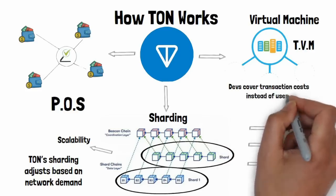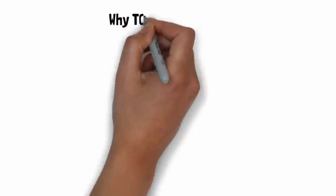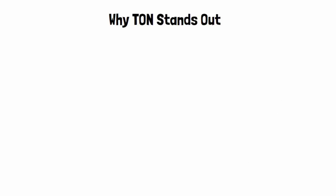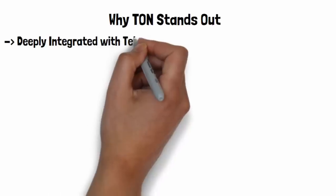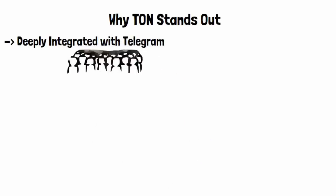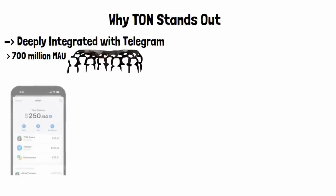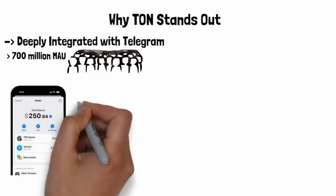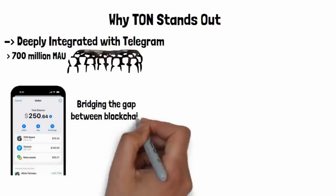So what makes TON unique compared to other layer one blockchain solutions? One of the biggest advantages is its deep integration with Telegram, which boasts over 700 million monthly active users and aims to surpass 1 billion soon. With this vast user base, TON's blockchain is positioned to make crypto more accessible to the average user. For example, TON's self-custodial wallet is directly integrated into Telegram, allowing users to send, receive, buy, and swap TON Coin effortlessly.